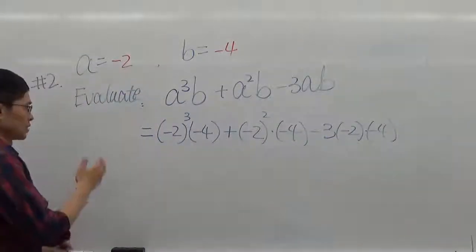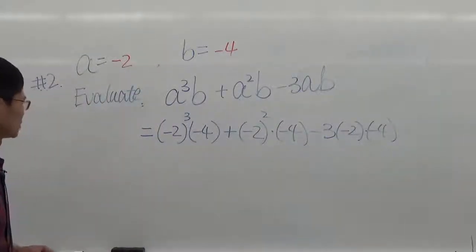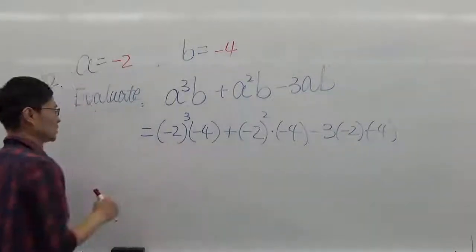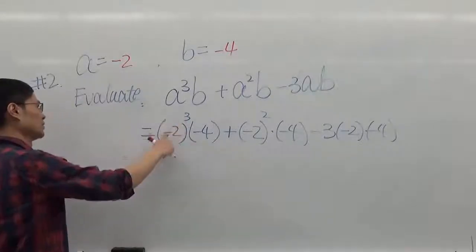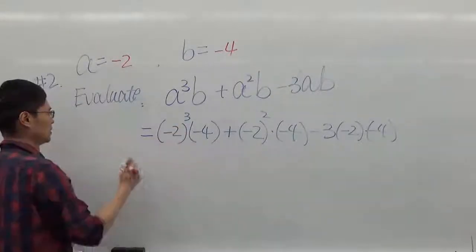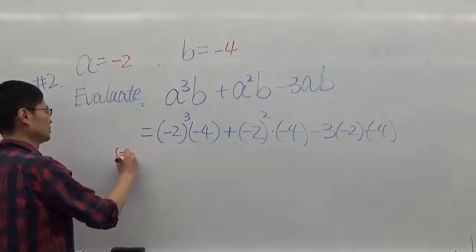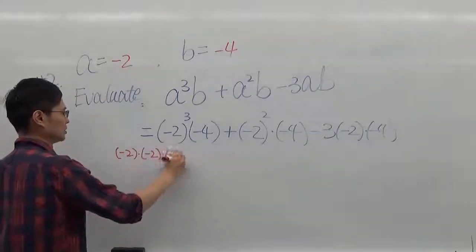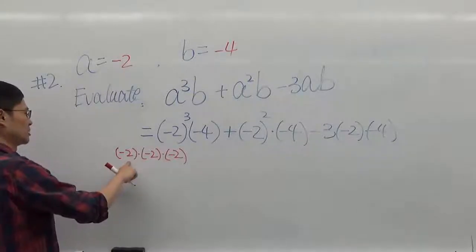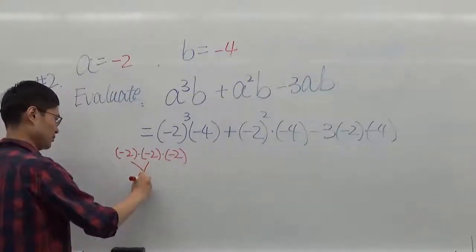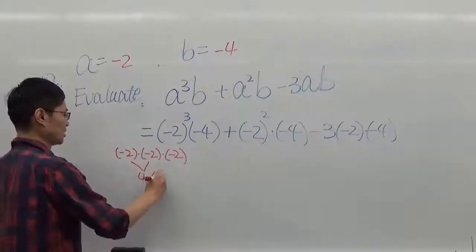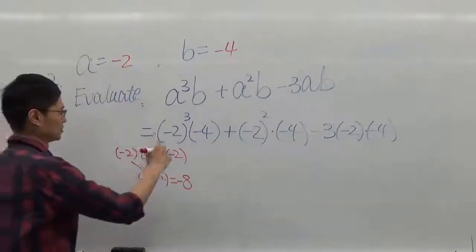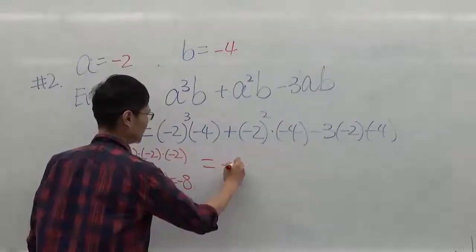We're starting with exponents. Let's start with negative 2 to the third. The exponent 3 applies to negative 2, so we have negative 2 times negative 2 times negative 2. Negative 2 times negative 2 gives you positive 4, then times the third negative 2 gives negative 8.